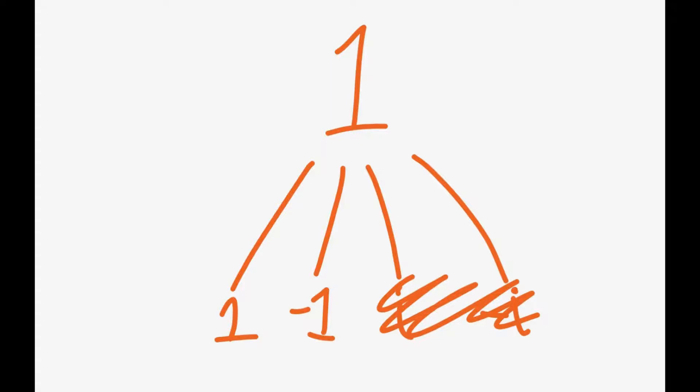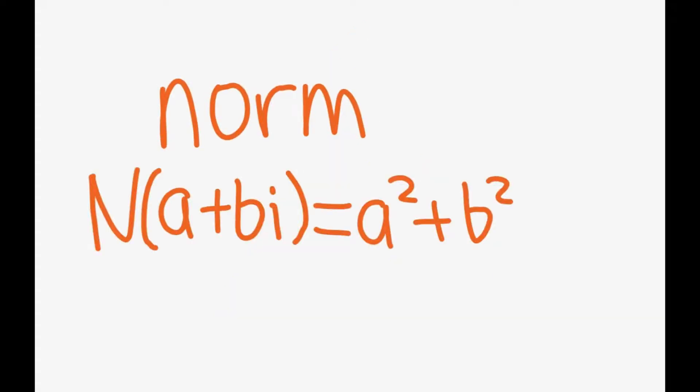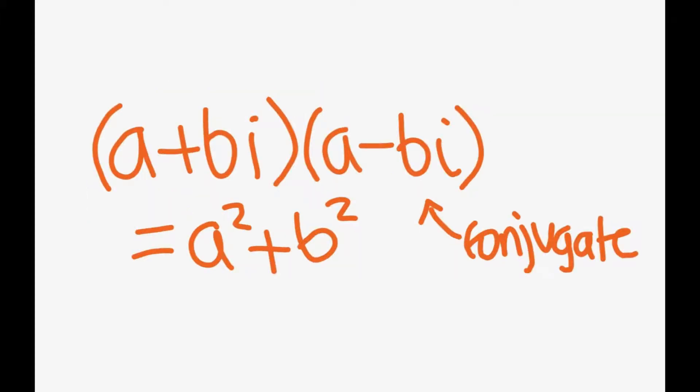Another useful term is the norm. It is defined as a squared plus b squared, and can be calculated by multiplying the specified Gaussian integer by its conjugate.